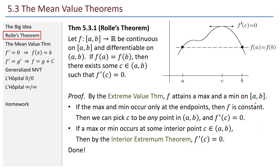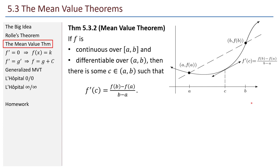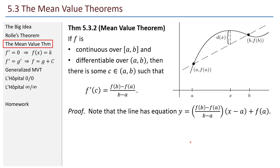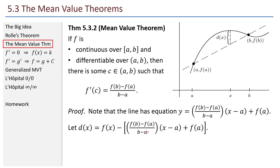Now let's see a consequence of Rolle's theorem: the mean value theorem. If f is continuous over the closed interval and differentiable over its interior, then there is some point c in the interior such that f'(c) equals f(b) minus f(a) over b minus a. The proof is not long. Note that the secant line has equation y equals the slope times (x minus a) plus f(a) — this is really just the point-slope formula using the point (a, f(a)) and the slope of the line connecting the two endpoints. Now let me create a new function d(x) that expresses the difference in height between the original function f and this line.